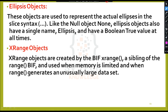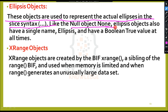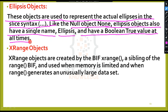Ellipse object: these objects are used to represent the actual ellipsis in the slice syntax. Ellipse objects have a single name, ellipsis, and always have a boolean true value.